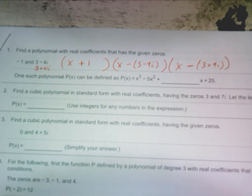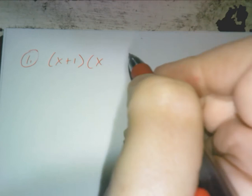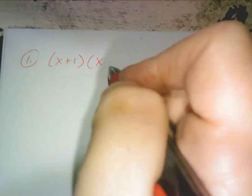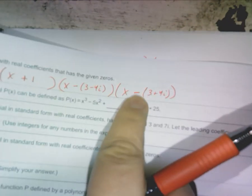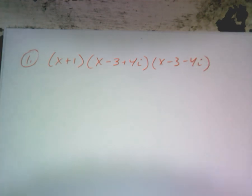And you're going to have to foil this. Do you need me to foil it with you? Yeah, these are the challenging ones. I'm going to rewrite this again. I'm going to distribute the minus sign right here — so minus three plus four I. And then this one, distribute the minus sign, would be X minus three minus four I. That's all I've done.